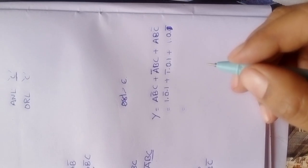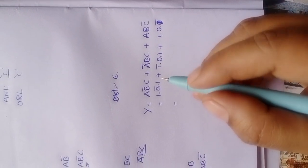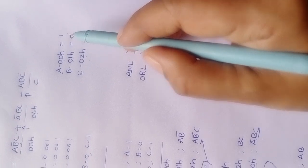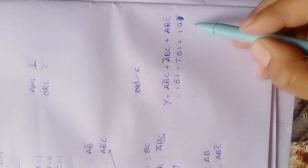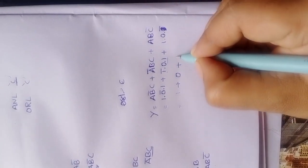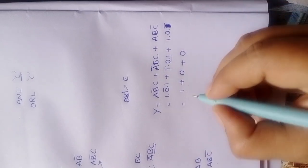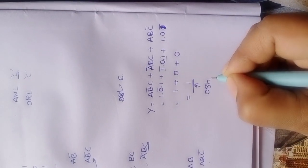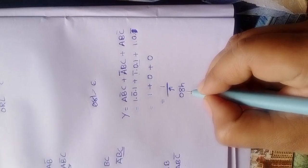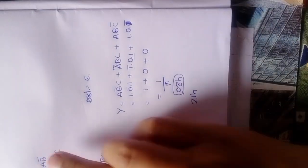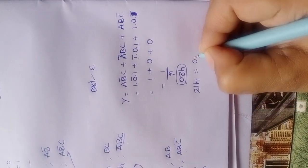Let us verify the result manually. With a equals 1, b equals 0, and c equals 1 applied to the expression: evaluating each term gives a partial result of 1 ORed with 0 ORed with 0, which equals 1. So the final answer is 1. After executing the program, the RAM location 21H should contain the value 01H to confirm this result.